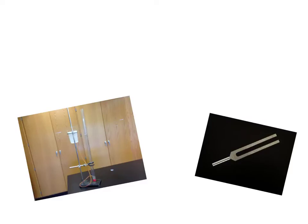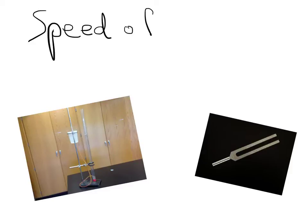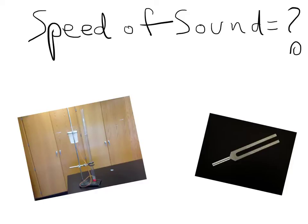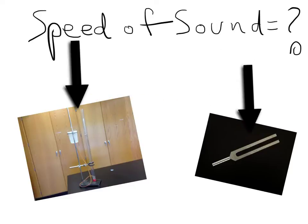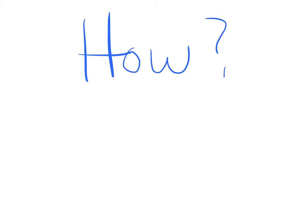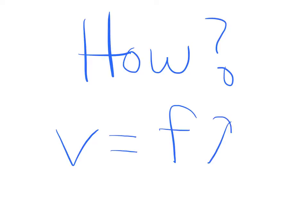In this lab we're going to measure the speed of sound using this apparatus and a tuning fork together. We'll use our trusty speed equals frequency times wavelength, so all we need is to get frequency and the wavelength and multiply them together.